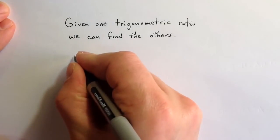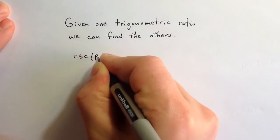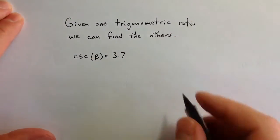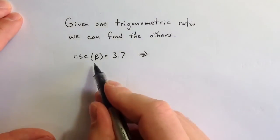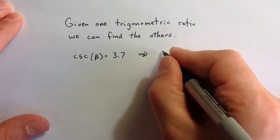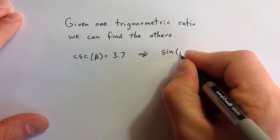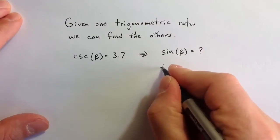Suppose we know that cosecant of some angle beta equals 3.7. We can use that fact to find any of the other trigonometric ratios for that angle beta. So let's just look at a few of those. Suppose we want to find sine of beta and tangent of beta.